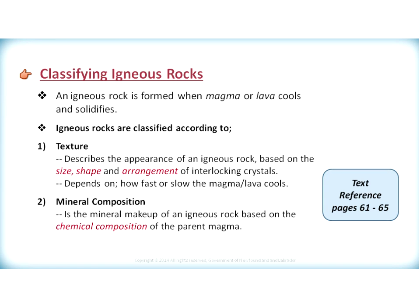When we classify igneous rocks, an igneous rock is formed when magma and lava cool and solidify. We generally classify igneous rocks according to two factors: texture and mineral composition. Texture describes the appearance of the igneous rock based on size, shape, and arrangement of interlocking crystals, and depends on how fast or slow the magma cools. Mineral composition is the mineral makeup of the igneous rock and is based upon the chemical composition of the parent magma. Text references can be found on pages 61 to 65.